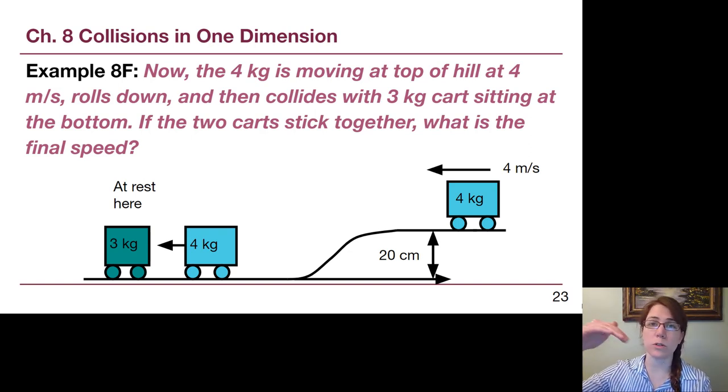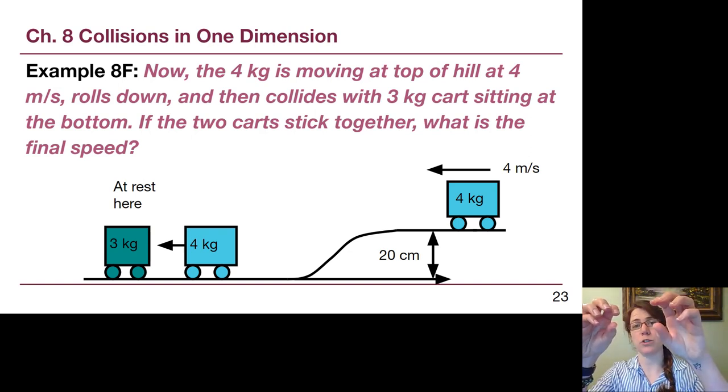Hopefully what we realize is that if it rolls downhill, it's going to speed up because it starts with kinetic energy and gravitational potential energy, and all of that is going to go into kinetic energy. It will be moving faster, and so we have to do an energy problem to figure out how fast it's actually moving at the beginning of the collision. We'll see a whole lecture video for this example as well.